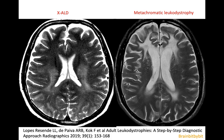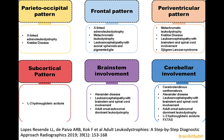On MRI you can establish whether it's a leukodystrophy; a key feature is that it's symmetrical, and there are also different patterns. A predilection for the parietal-occipital region suggests adrenoleukodystrophy, which occurs posteriorly in 85% of cases, whereas anterior involvement is more in favor of metachromatic leukodystrophy. If you see a leukodystrophy on MRI, you can consult a nice article in Radiographics 2019 to come up with a differential diagnosis. It's not essential to memorize these, as they are rare diseases.